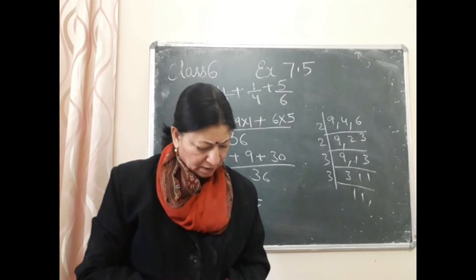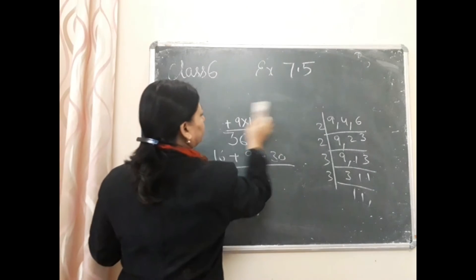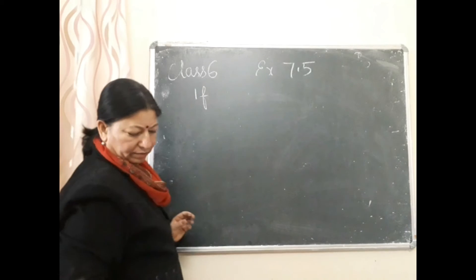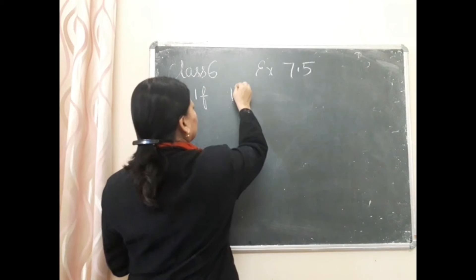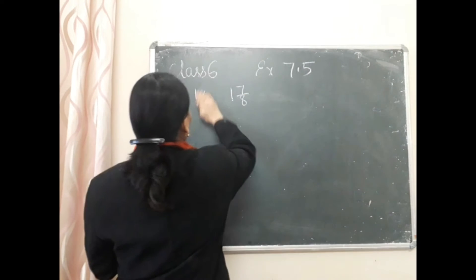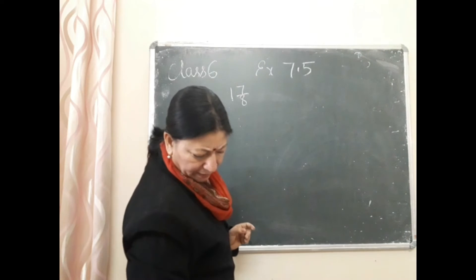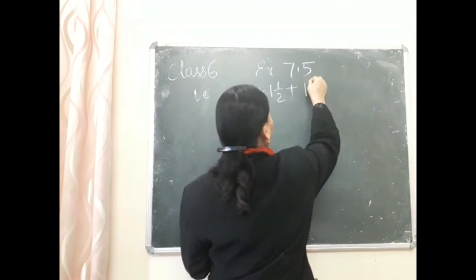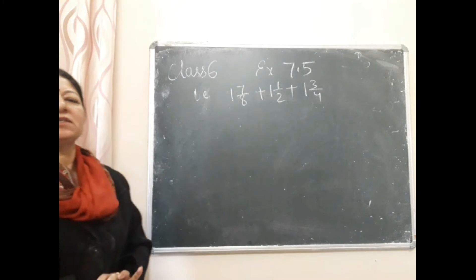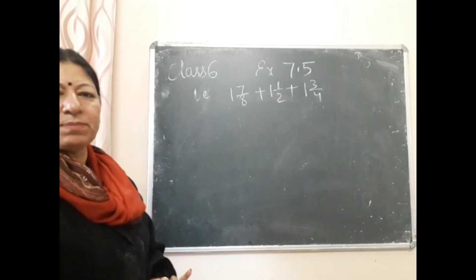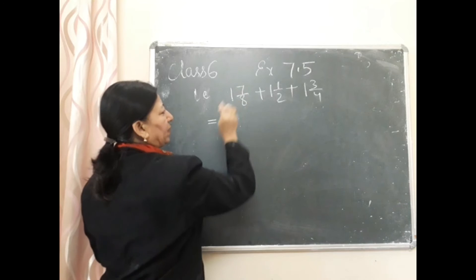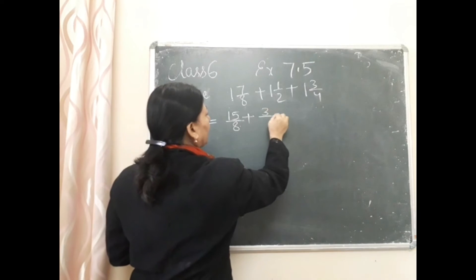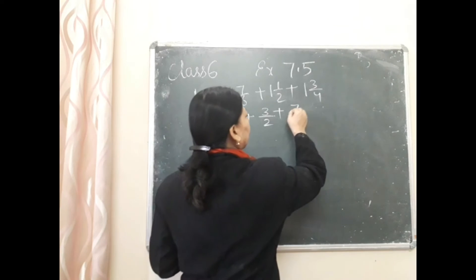Next, question number E: 1 7/8 + 1 1/2 + 1 3/4. यह सारे question mixed fraction में हैं। सबसे पहले इन्हें simple (improper) fraction में change करेंगे। 1 7/8 → (8×1+7)/8 = 15/8; 1 1/2 → (2×1+1)/2 = 3/2; 1 3/4 → (4×1+3)/4 = 7/4.